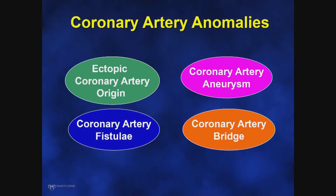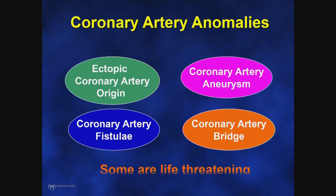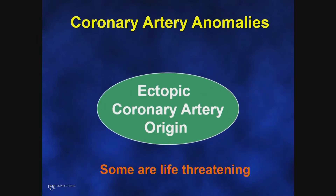Coronary artery anomalies are common congenital anomalies that you can see on CT scan or coronary angiography, and they consist of ectopic coronary artery origin, coronary artery aneurysm, fistulae, or bridges. Myocardial bridges are one of the most common congenital anomalies noted. Most of these anomalies fortunately are benign, but some are life-threatening, such as ectopic coronary artery origin, which is the main topic of discussion today.